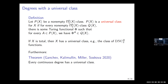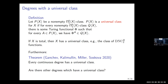If X is total, then X has a universal class as given by the DNC functions relative to X — DNC-2. Furthermore, Gantchev, Kalimulin, Miller, and Soskova showed that every continuous degree has a universal class. Since the continuous degrees properly contain the total degrees, this is a generalization of the obvious observation. This raises the natural question: which degrees have a universal class and which don't? Maybe it's exactly the continuous degrees, maybe it's all E degrees — there is some question here.